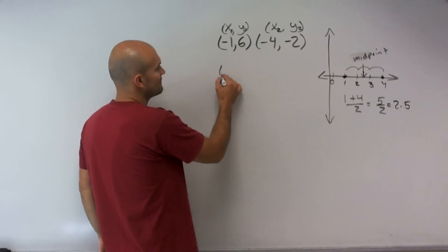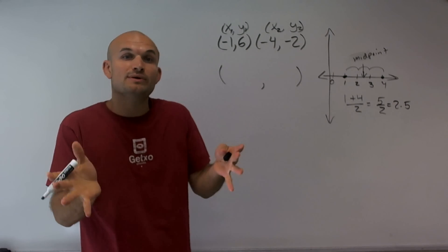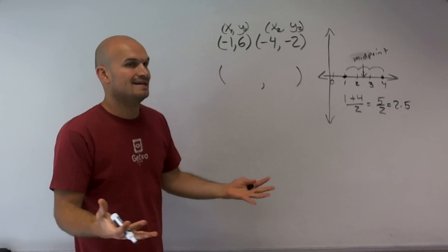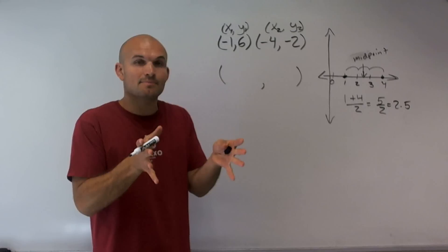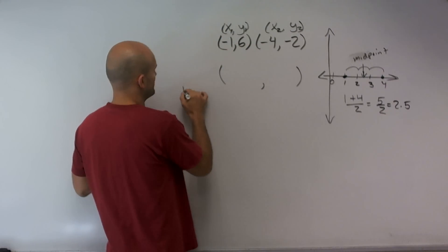So now, if I want to find the midpoint, the midpoint is a coordinate point. It's a coordinate point that's between the two points. So that means I need to find the average or that midpoint of your x values and your y values. So I'm going to write up what the formula looks like.